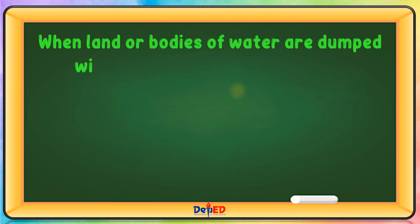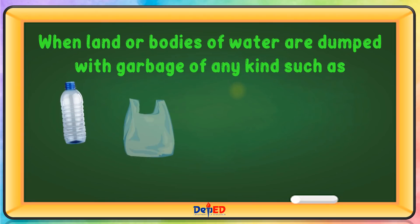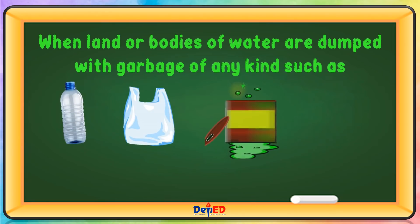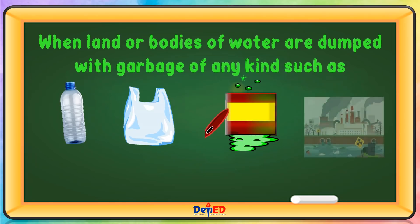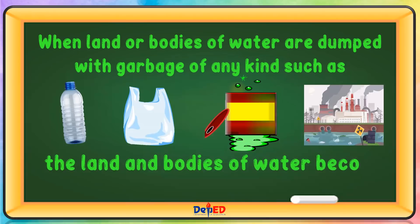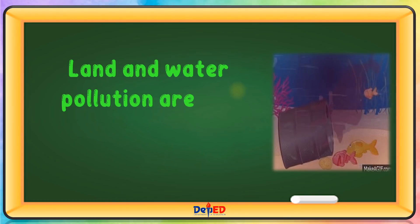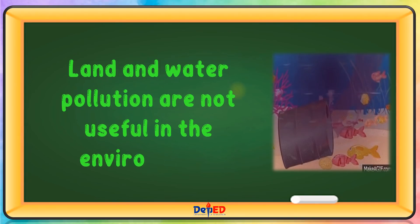When land or bodies of water are dumped with garbage of any kind — such as plastic bottles, plastic bags, chemicals, and toxics from companies — the land and bodies of water become polluted. Land and water pollution are not useful in the environment.